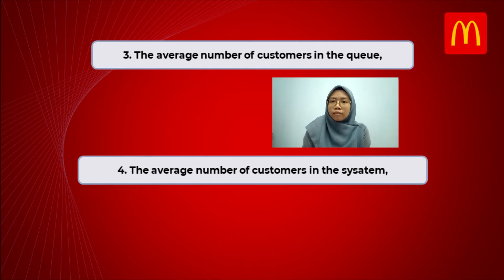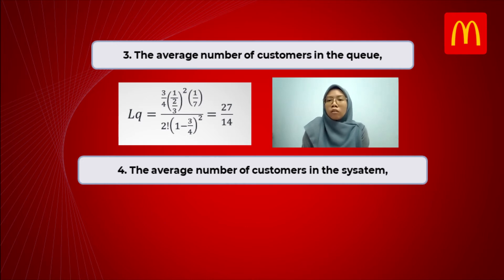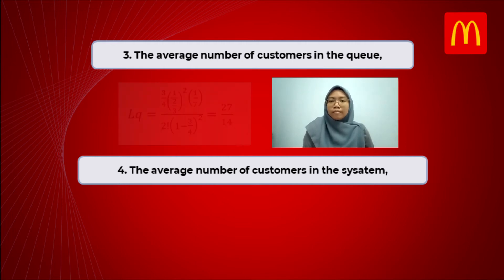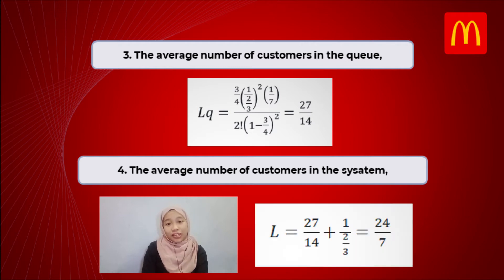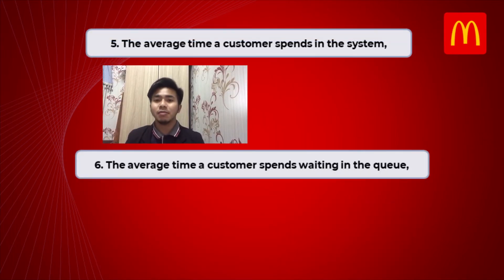We also calculate the average number of customers in the queue using the formula: Lq equals P to the power of S times P0, over S factorial times (1 minus P) squared, multiplied by lambda over mu. We found that the average number of customers in the queue is 27 over 14, or approximately 1.93 customers. For the average number of customers in the system, we use L equals Lq plus lambda over mu, and we get 24 over 7.